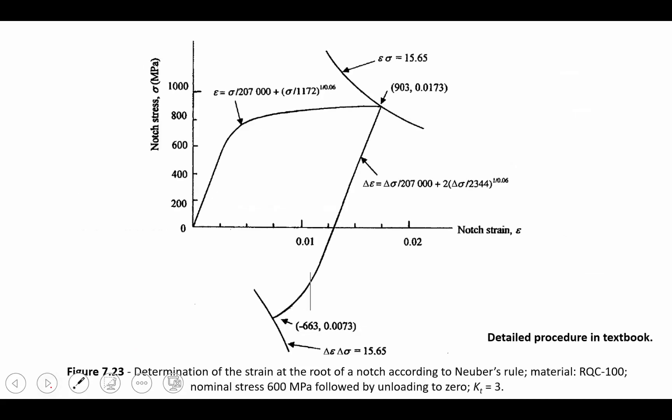How do we work towards solving this problem? Well, the first thing we want to do is gather the material properties for the RQC-100 steel. The next thing we're going to need to do is work through the steps in getting our K_F factor and getting the other material properties together into either Neuber's rule or Glinka's rule.